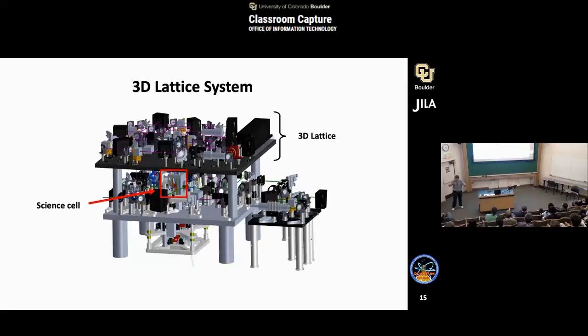You create a magneto-optic trap in the bottom. There's a push beam which pushes them up through a differential pumping tube. Then they go into the top chamber, which is this thing up here, where all the fun happens. The reason for that is you want a very high vacuum in the science cell you're going to do the experiments. Actually, the lifetime up here is of the order of 100 seconds or so. It's way longer than anything we're going to do with the experiment. So basically, there's no atoms up here that's going to degrade it. The other things that are on here: there's the science cell. This top layer here is all of the 3D lattice optics.